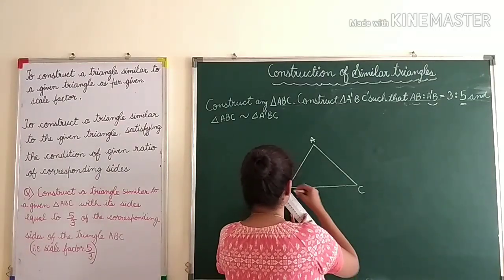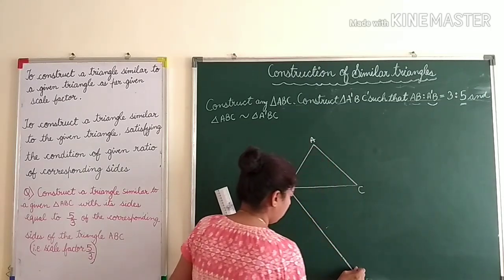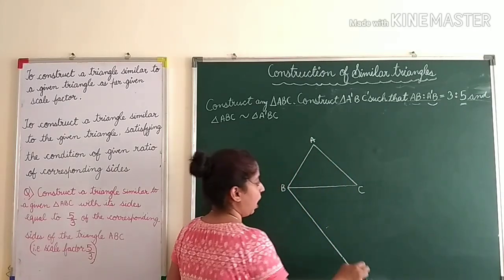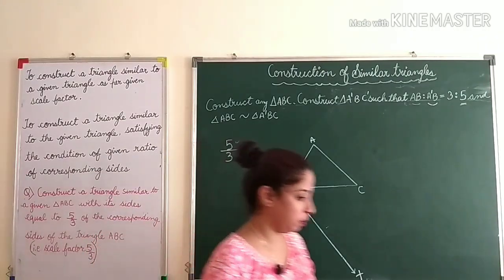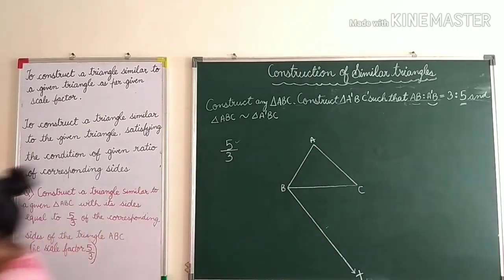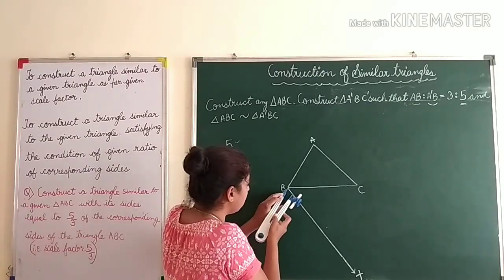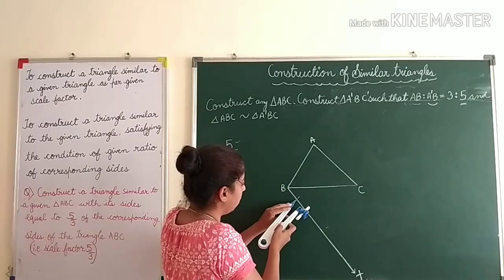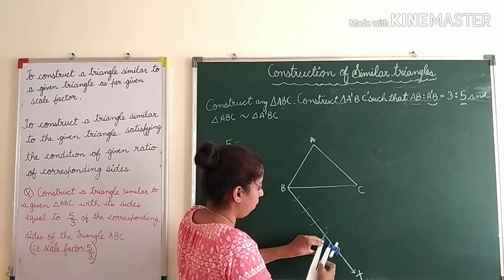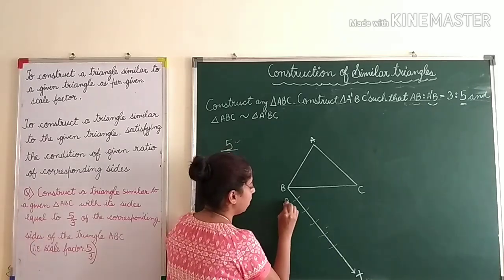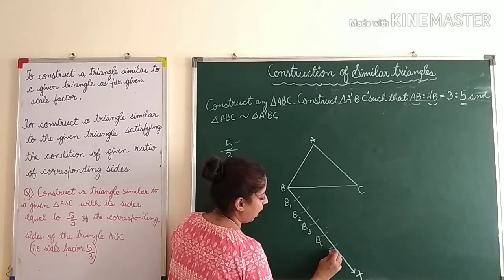Again from B we draw ray BX. Since the factor is 5/3, we select the bigger number — 5 — and make that many divisions on the ray: 1, 2, 3, 4, 5. We name them B1, B2, B3, B4, and B5.